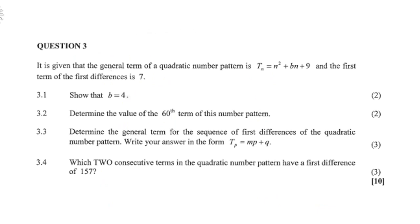Question 3: it is given that the general term of a quadratic number pattern is tn equals n squared plus bn plus 9, and the first term of the first difference is 7. This is a quadratic number pattern. Take note: 10 marks for question 3.